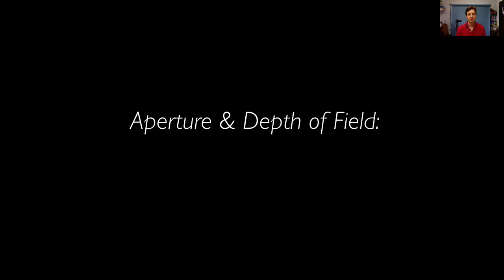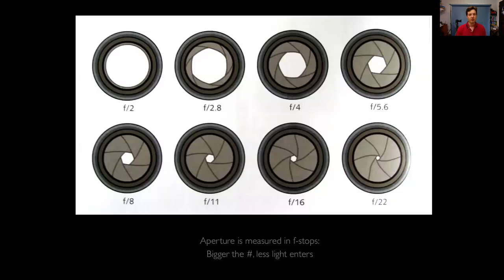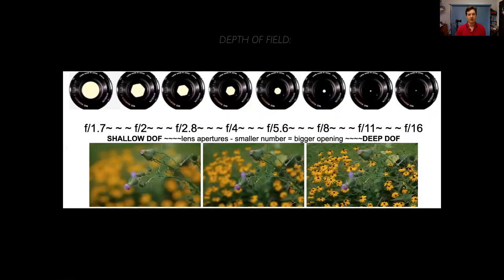Aperture and depth of field are intimately related because we control depth of field by aperture. So just a quick review: what is aperture? Aperture is the diaphragm in the lens that controls how much light comes into the camera and hits the sensor or piece of film. The smaller the f-stop number, the bigger that opening and the more light coming in. The larger the number, the smaller that diaphragm is closed down, limiting the amount of light. And this has an impact on depth of field. But first we have to think about what depth of field actually is.